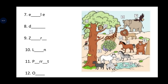Moving on to number seven: eagle. E-A-G-L-E, eagle. Number eight is duck. D-U-C-K, duck. Number nine is zebra. Z-E-B-R-A, zebra. Number ten is lion — the correct pronunciation is lion, not 'laiyon'. L-I-O-N, lion. Number eleven is parrot. P-A-R-R-O-T, parrot. And the last one is owl. O-W-L, owl.